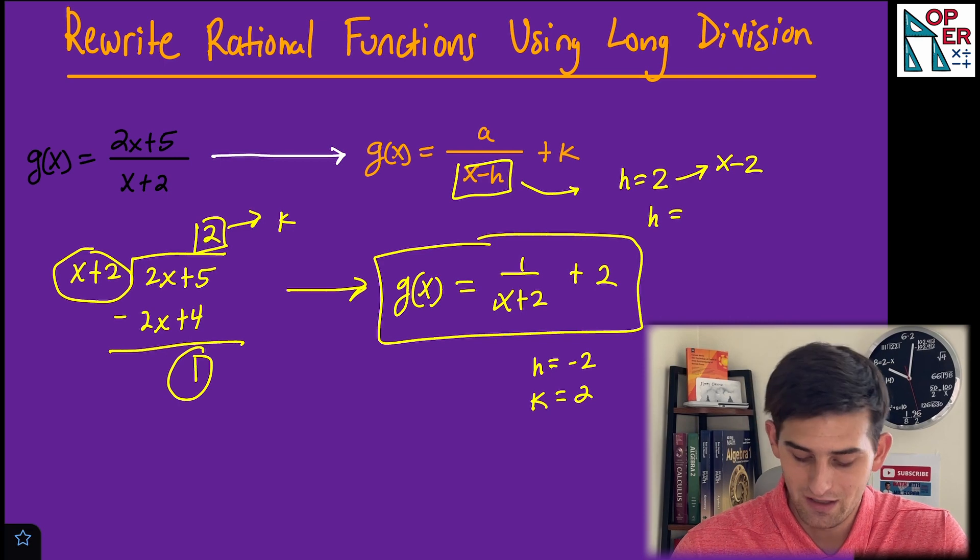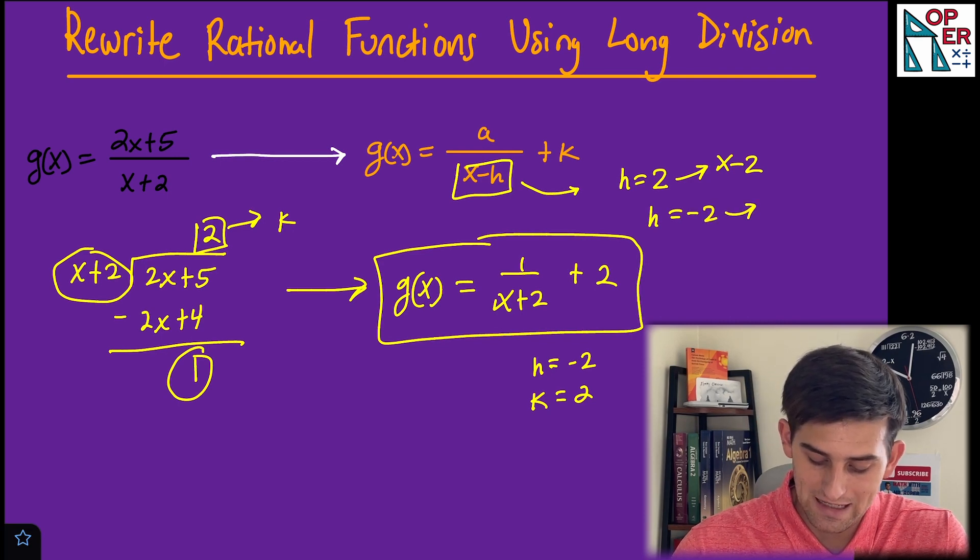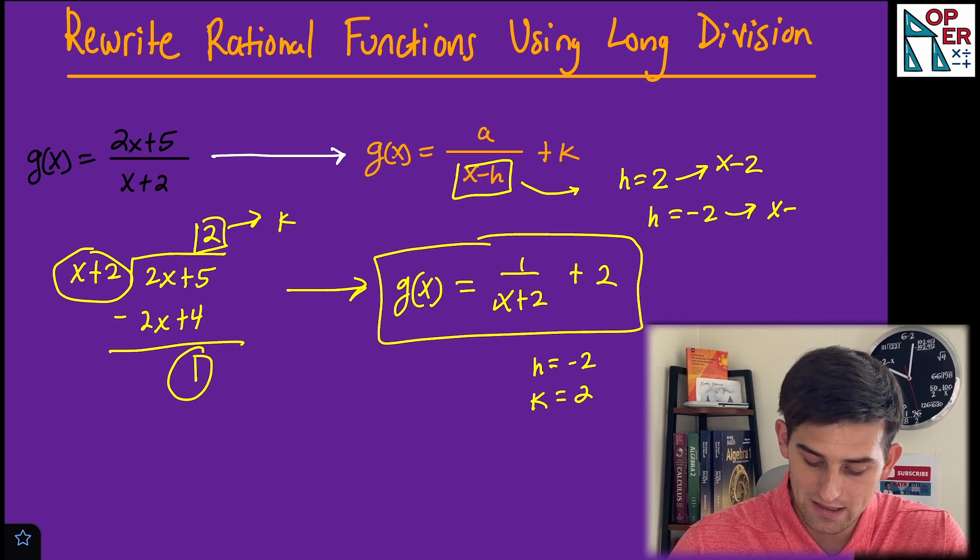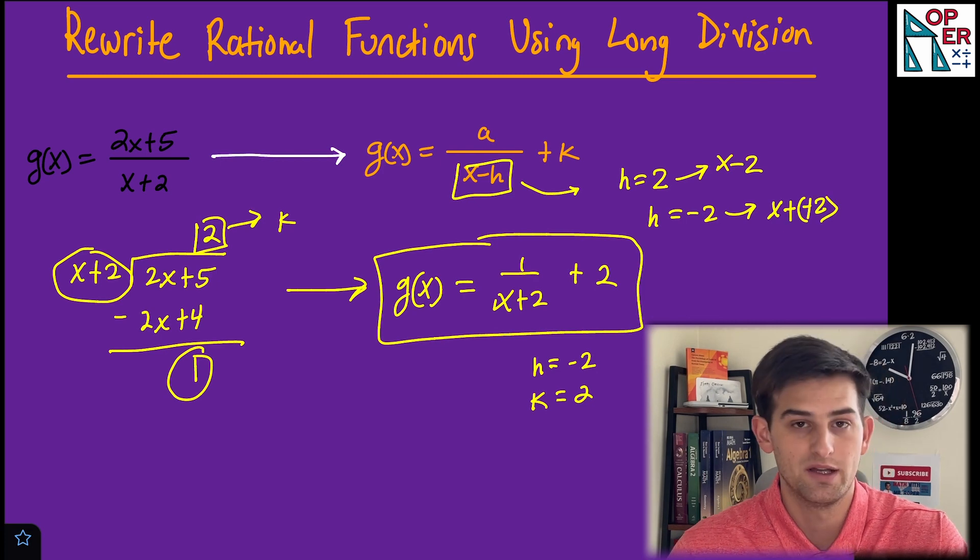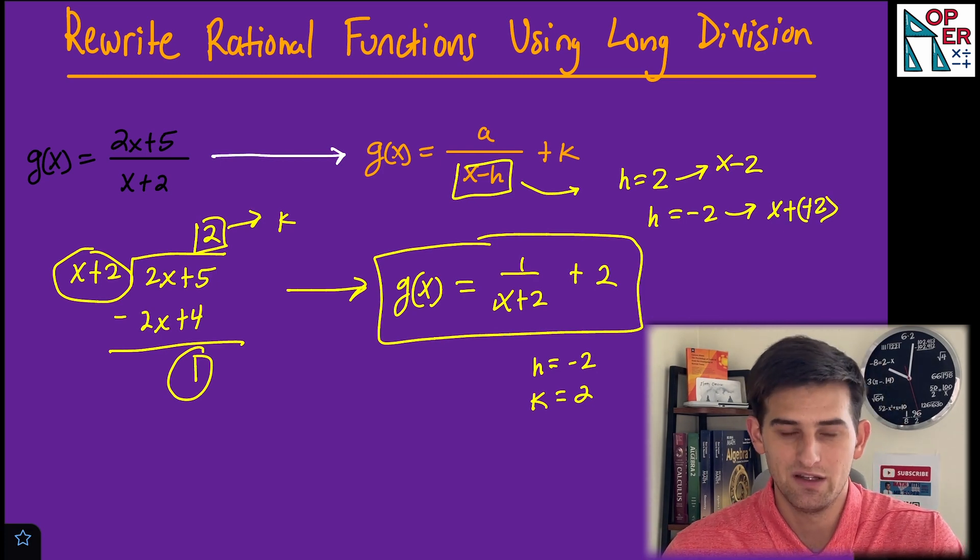That's not what ours looks like, right? Ours is x + 2. So that would be like x - (-2), which becomes plus. That's why h is negative 2 in this case.